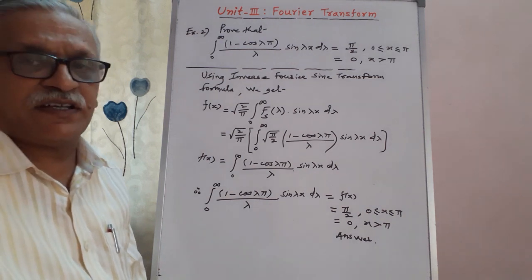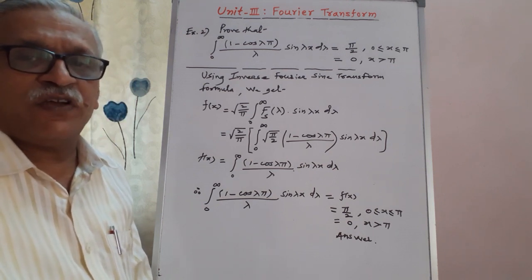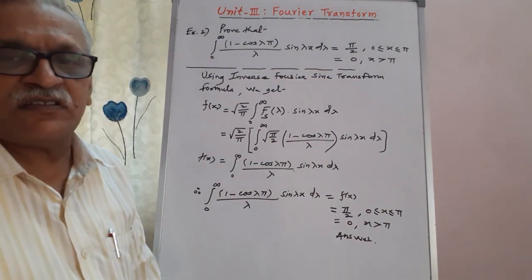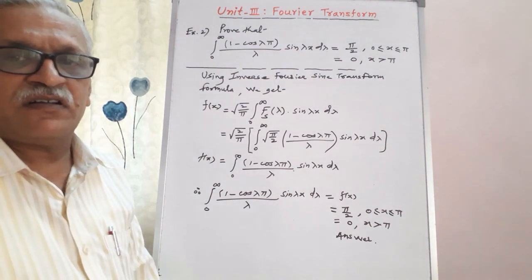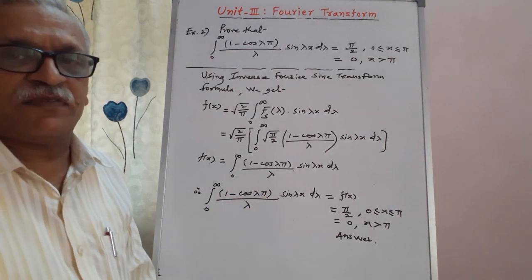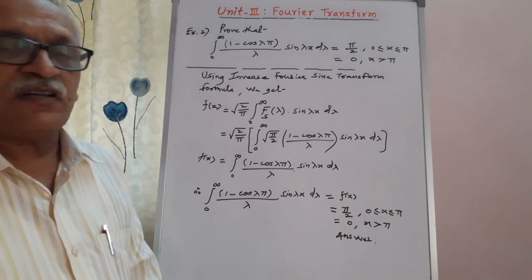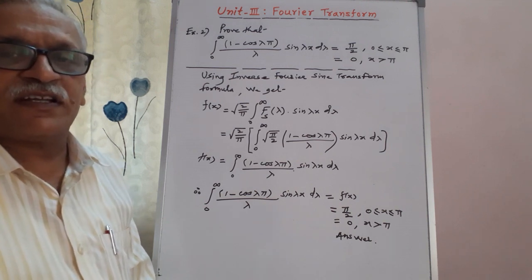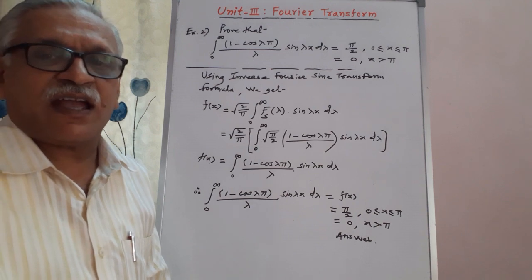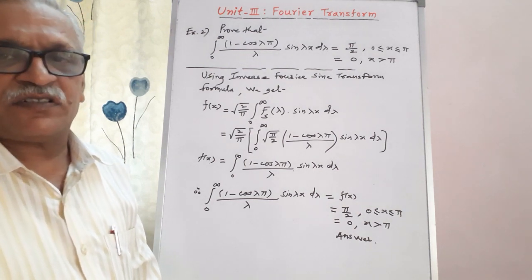With the help of these two simple examples I have tried to explain how we can obtain the required Fourier integral representation. So far I have discussed a total of four problems — the first two in the first part and these two more in the second part. More will be discussed in the next part on Fourier integral representation. If you are watching my videos, please like and share, and subscribe to my channel for the latest updates. Thank you very much.